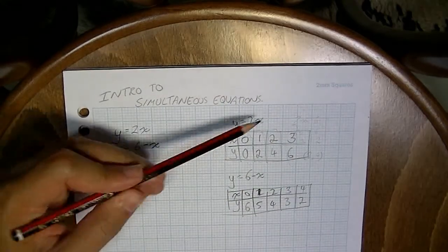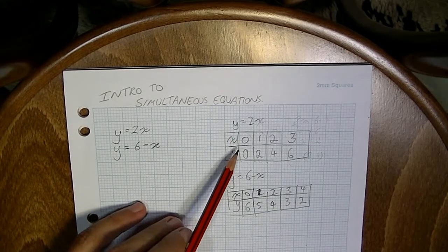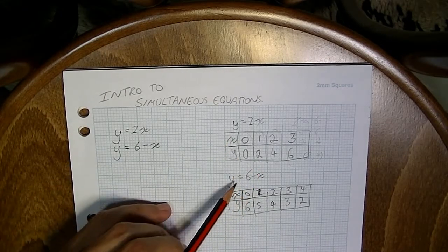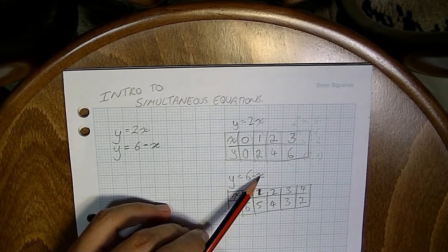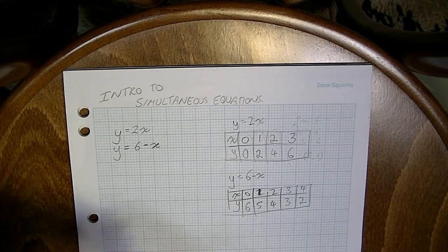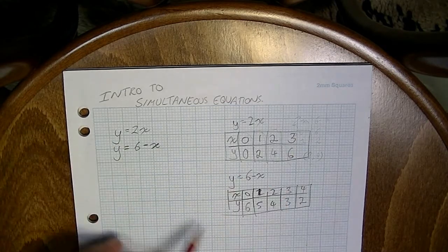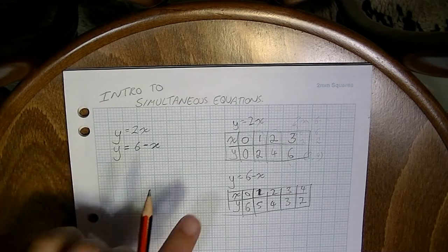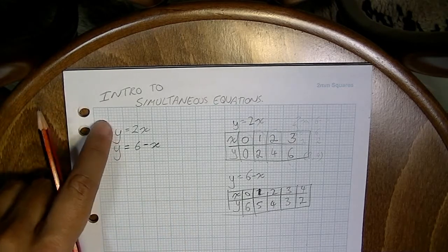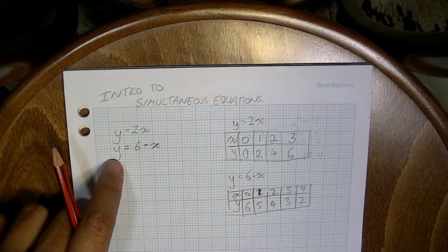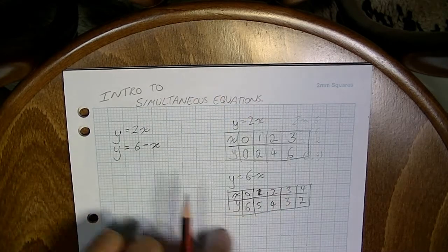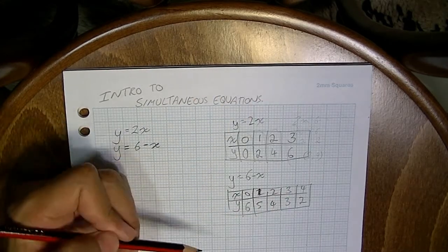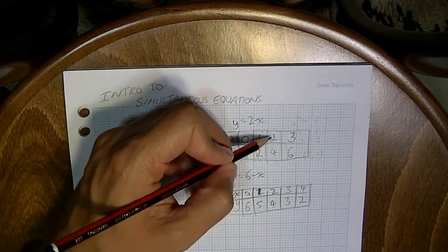Okay, now we have y equals 2x, and I've come up with this little table here. And we have y equals 6 minus x. Now, when we're looking for a simultaneous solution to these equations, what we're really looking for is a pair of values that goes into y equals 2x, as well as y equals 6 minus x. Look in those tables there for a pair of values, and you can see that it's right here.